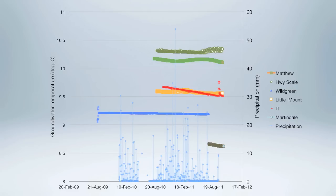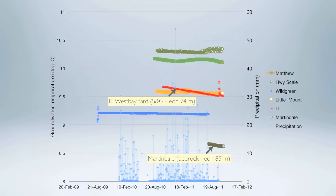Here I would like to draw your attention on the groundwater temperature measured in two wells. The Island Timberland West Bay Road well is a deep well completed in the lower confined sand and gravel aquifer at 74 meters below ground. It indicates a relatively constant temperature with no obvious seasonal fluctuations, and a slight cooling trend of 0.2 degrees C per year. Interestingly, it shows the same trend as observed in the Martindale well, which is completed in bedrock at 85 meters. This would indicate that the deep sand and gravel aquifer is likely recharged through the bedrock.